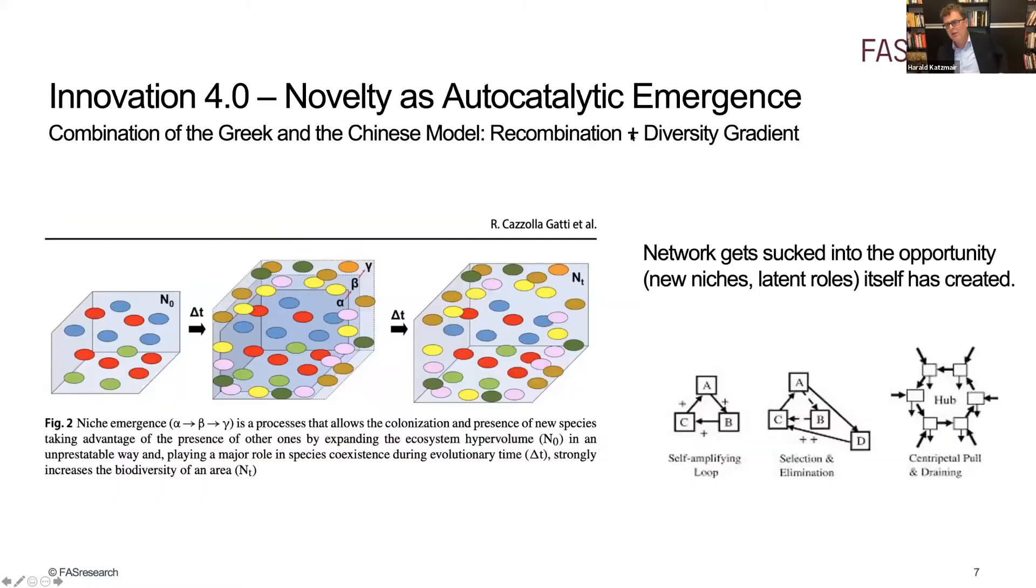We of course here in this community are linked with this model. Novelty is the product of catalytic emergence. But when you think about it, it's actually a recombination of the Greek and the Chinese model, because you have the recombination model built in there, plus the diversity gradient that is actually part of the whole theory of the adjacent possible. The theory that networks constantly get sucked into the opportunity, the new niches that it itself has created. So novelty is the product of a process where a network through interactions and recombinations creates a space for the next step where the new niche can actually emerge.